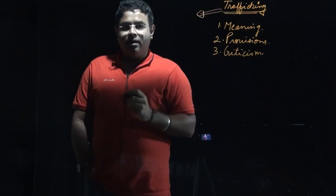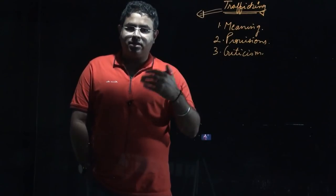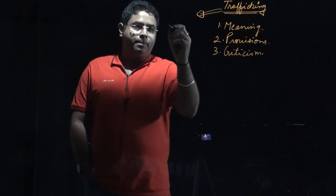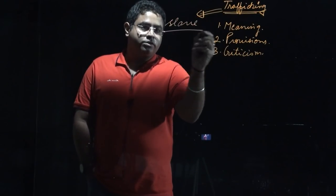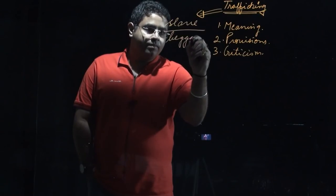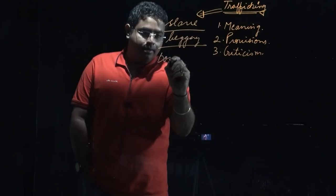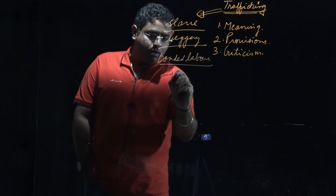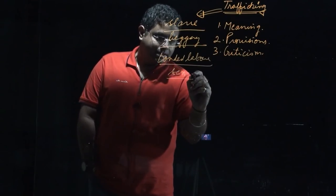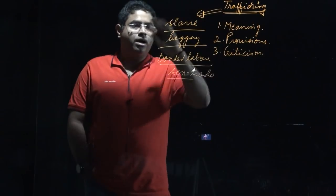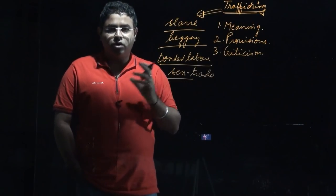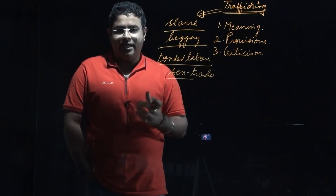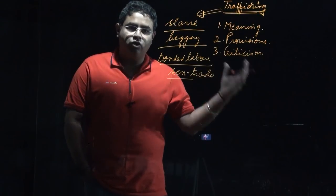The reason behind trafficking is people are treated as commodities. Human beings are sold for the purpose of slavery, beggary, bonded labor, and for sex trade. These are the purposes because of which trafficking is the most important invisible crime against human beings.